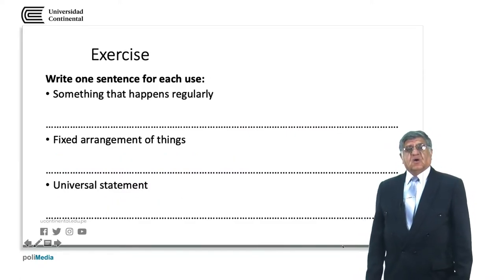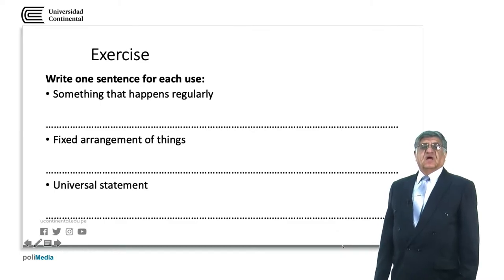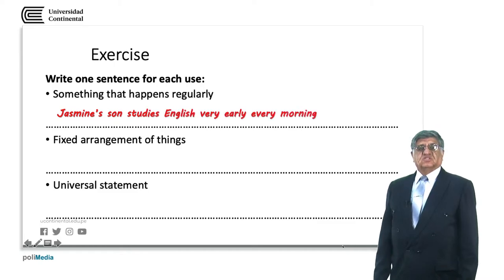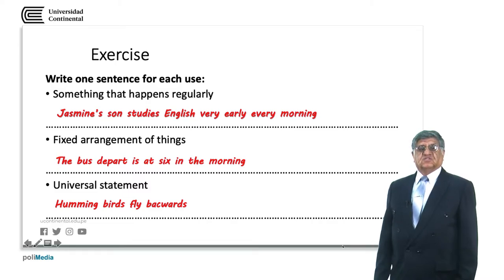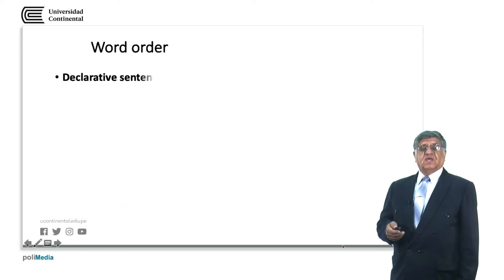Examples are something that happens regularly. We have fixed arrangement of things and universal statement. Jason studies English very early every morning. The bus departs at 6 in the morning. Hummingbirds fly backwards.